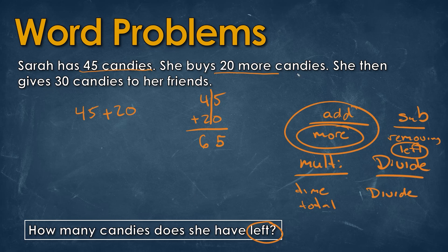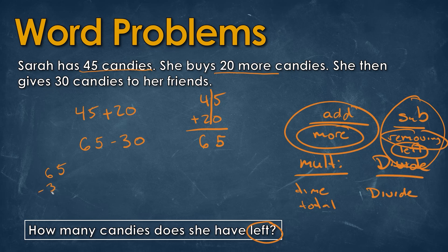And then it says she gives 30 candies to her friends. Well, she's removing candies, and we also have this other clue: how many candies does she have left? So we know that our second step is going to be subtracting. We have 65 minus 30 — looking at the right column first, 5 minus 0 is 5; 6 minus 3 is 3. So we're left with 35 candies.